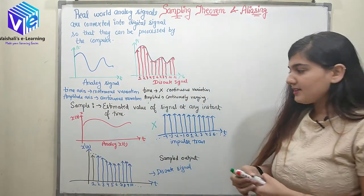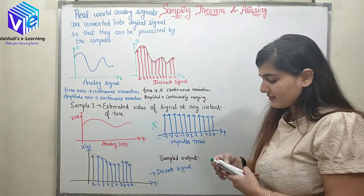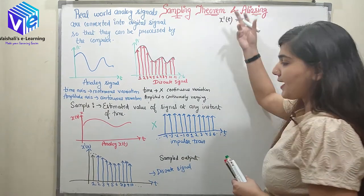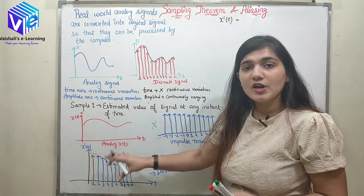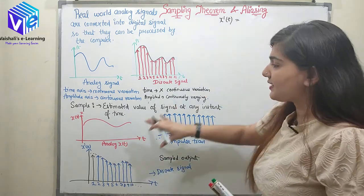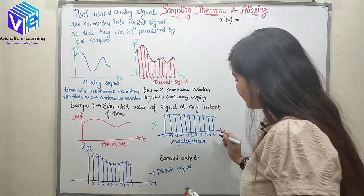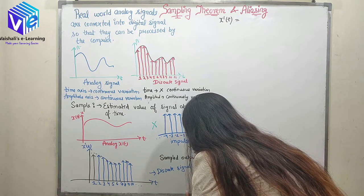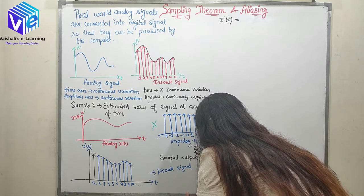Now we will see the mathematics behind this. If I talk about the analog signal, the analog signal is represented by X(T). X'(T) — which is the discrete or sampled signal — is represented as the product of X(T) and the impulse train. The impulse train is represented as the summation from n equals minus infinity to infinity of delta of T minus n·Ts, where Ts is my sampling instant.